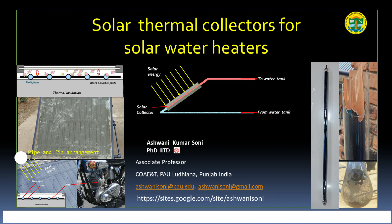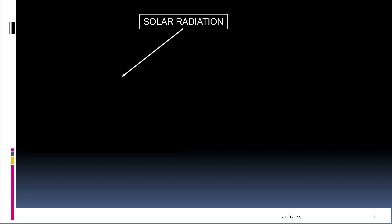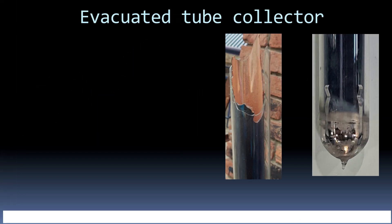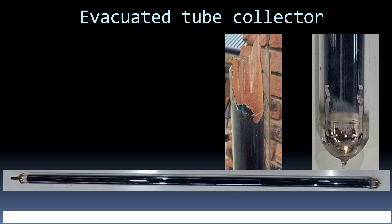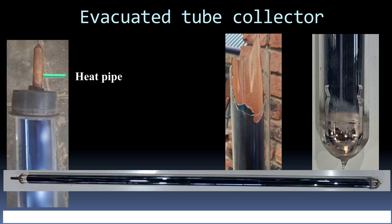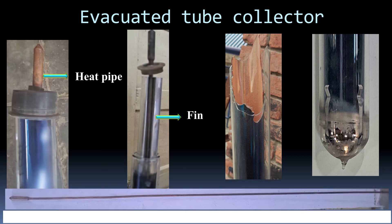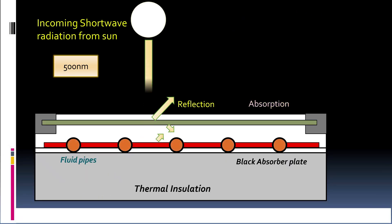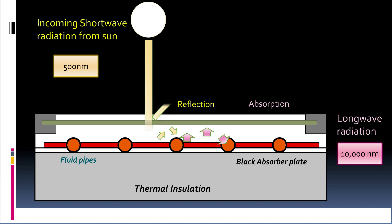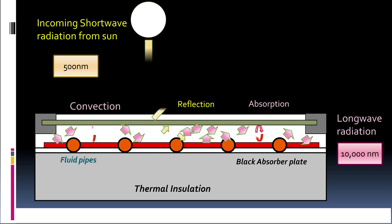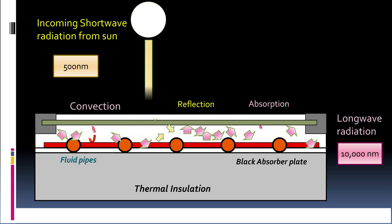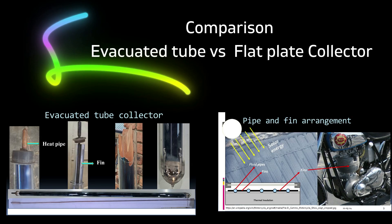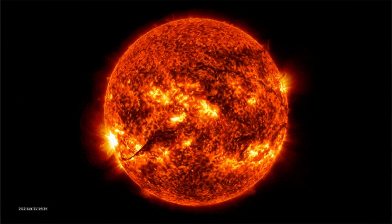In this video we will discuss solar thermal energy conversion. We'll see details of the evacuated tube collector, evacuated tube with heat pipe, and flat plate collector. We'll talk about the concept of the greenhouse effect as it relates to solar thermal collectors, and also do a comparison of the evacuated tube collector with the flat plate collector.